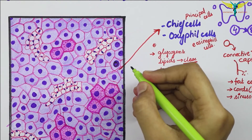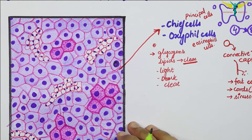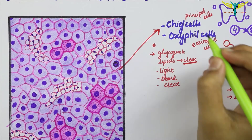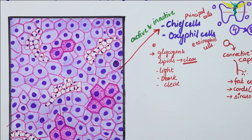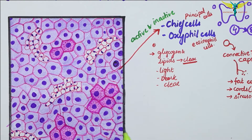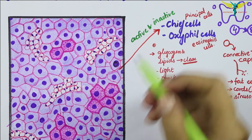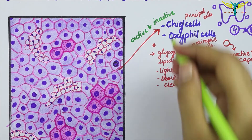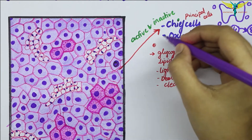In the electron microscope, active chief cells have abundant granular endoplasmic reticulum and well-developed Golgi complexes. Both active and inactive chief cells contain glycogen, with the amount greater in inactive cells. In the normal parathyroid gland, the number of inactive cells is greater than the number of active cells.